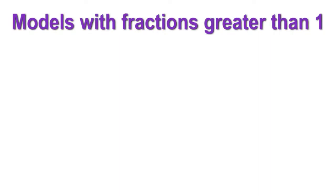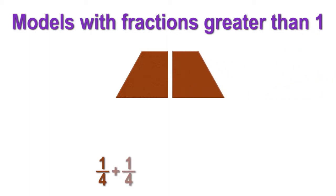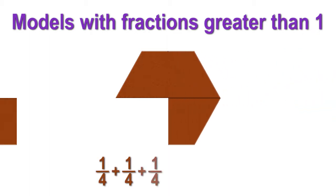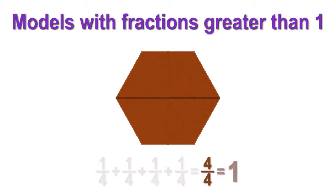They also learn to recognize when a model shows a fraction greater than one. If the brown trapezoid is the unit fraction 1 fourth, build the whole: 1 fourth plus 1 fourth plus 1 fourth plus 1 fourth equals 4 fourths, which is equivalent to one whole.